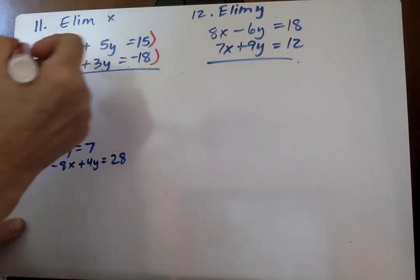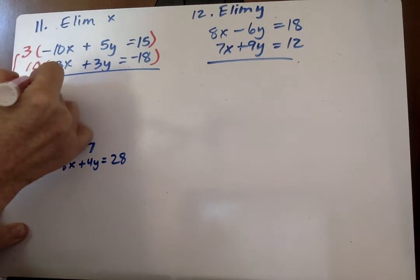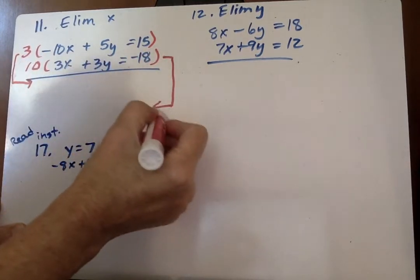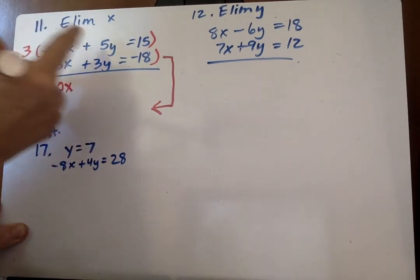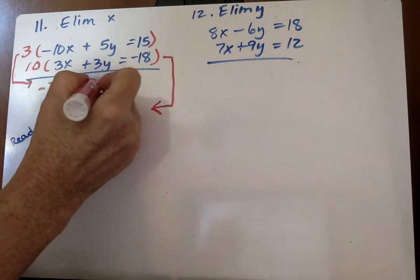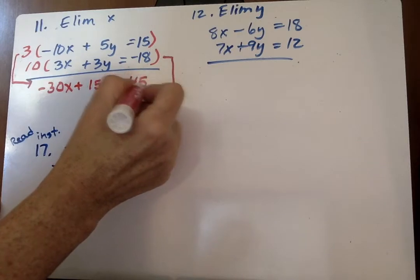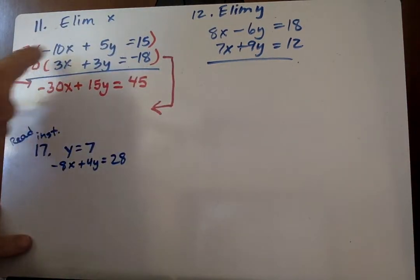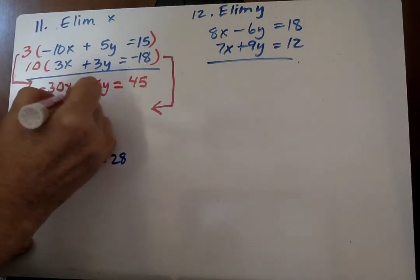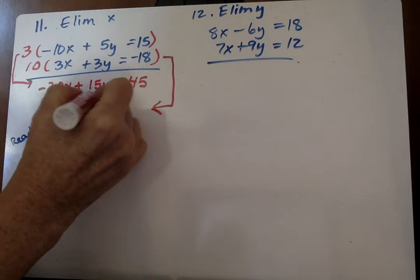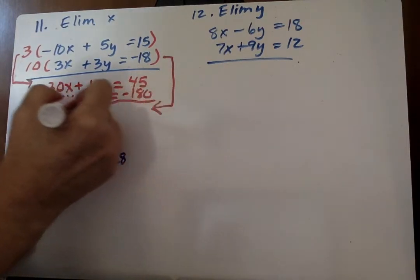Now I have to multiply every term by that. So I go 3 times this, and this is going to be right down here. And then I'll take the second one and put it down below. So the first one is negative 30x. 3 times 5 is 15y equals 15 times 3 is 45. So now I multiply the second equation by 10, and I get 30x plus 30y equals negative 180.